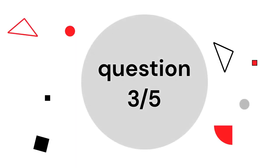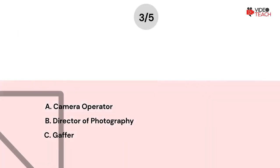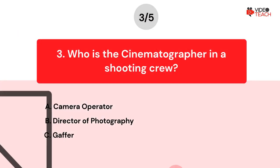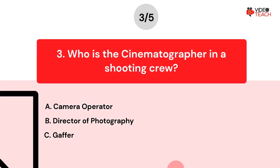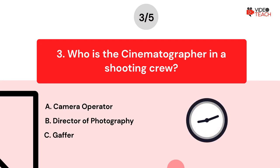Question number three. Who is the cinematographer in a shooting crew? Option A: Camera operator. Option B: Director of photography. Option C: Gaffer. Now you have about 15 seconds to think about your answer.